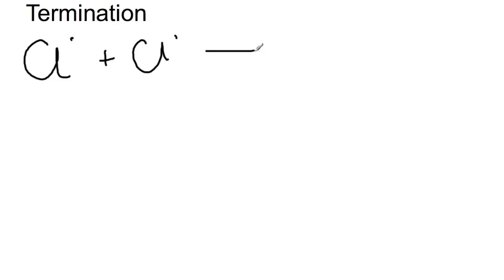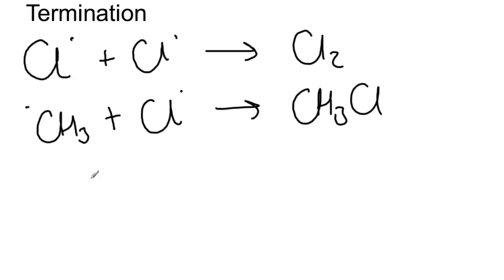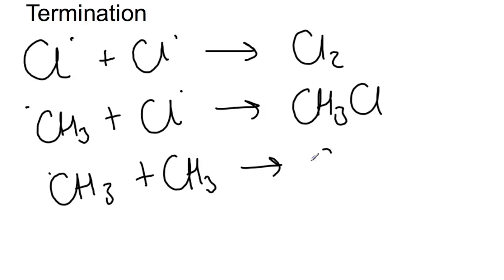The final step is termination. This is where two radicals come together to produce a stable molecule. There are three termination steps for this reaction. We can have chlorine plus chlorine to give a Cl2 molecule. You could have a methyl radical join with a chlorine radical to produce methyl chloride, which is one of our products. Or you could have two methyl radicals join to produce ethane.